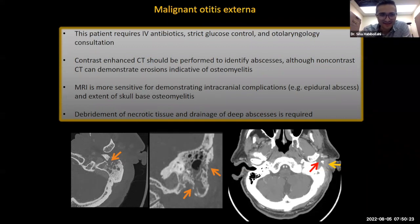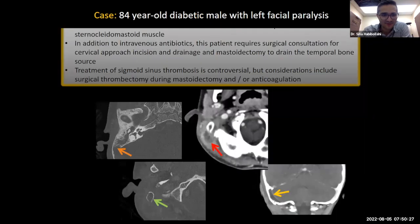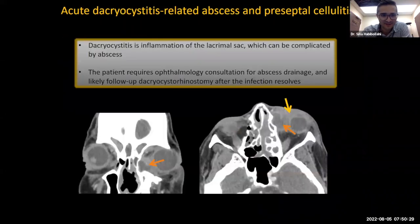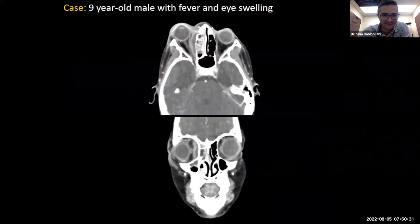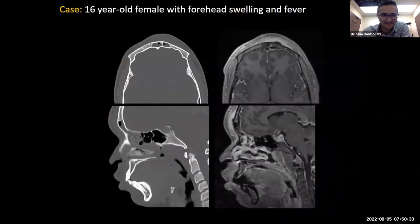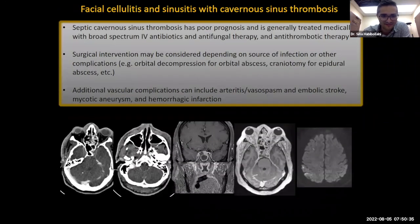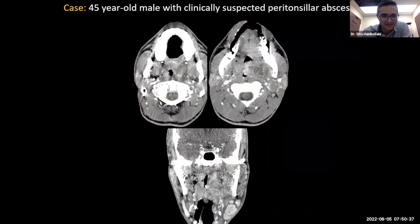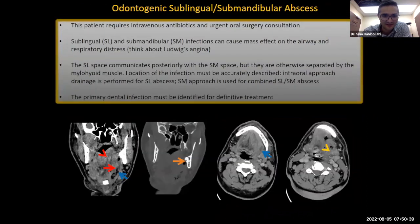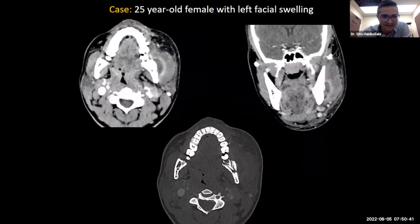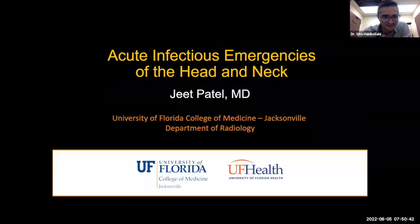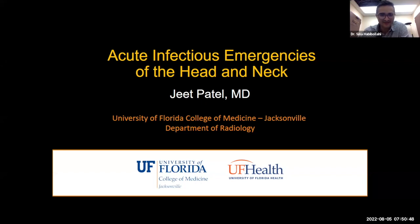I think we can move to the Q&A session. But before that, I just want to mention that today we have a special panelist, Dr. William Dillon — our co-founder of Health for the World, executive vice chair of radiology at UCSF, professor of neuroradiology at UCSF, and past president of the American Society of Neuroradiology and American Society of Head and Neck Radiology. We're really glad to have you here this week, Dr. Dillon.